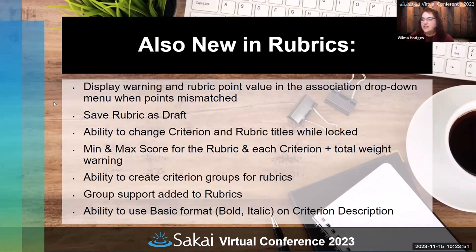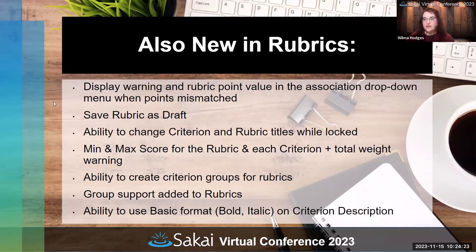There's also the ability to create criterion groups for rubrics — this may also be backported to Sakai 22, so you may have seen it already. You can create groupings in the rubric for sets of criteria. Group support has also been added, so you can use rubrics with group grading and group assignments. You can also use some basic formatting within descriptions, so if you want to bold or italicize things within the text of a criterion description or a rating, you can do that now.